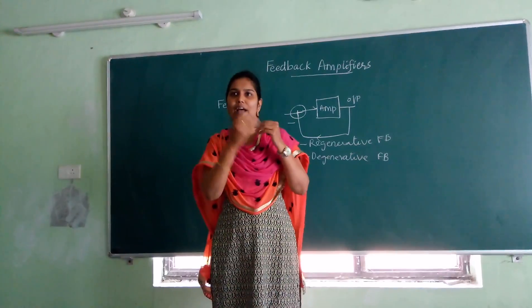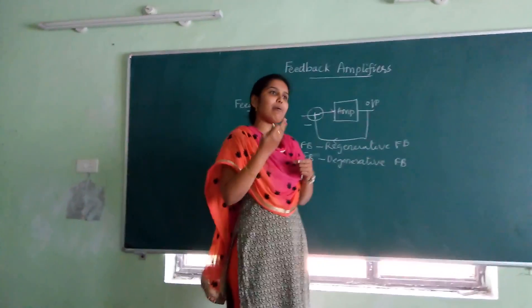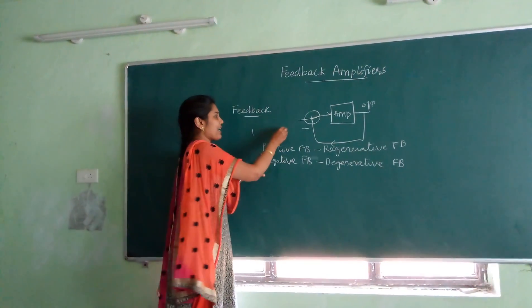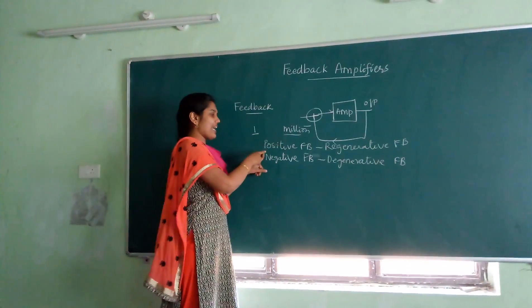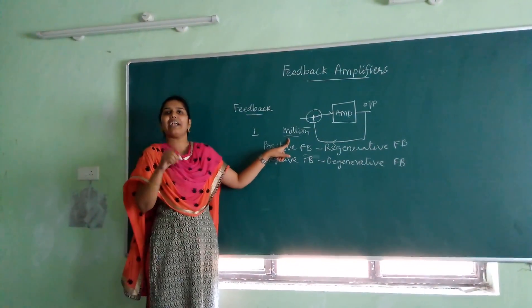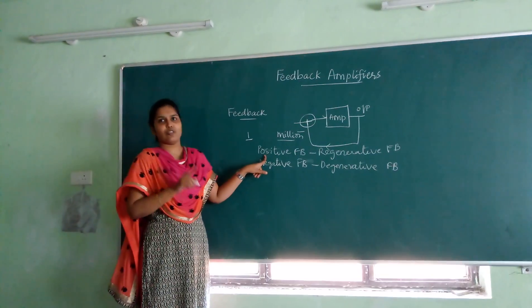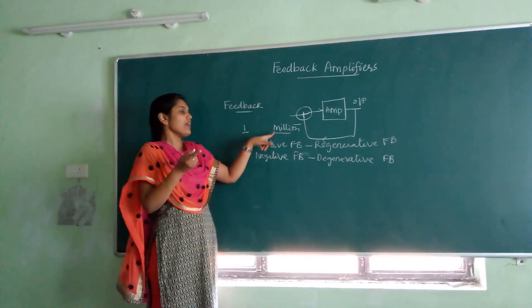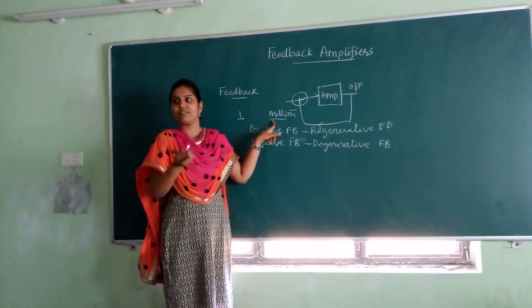If you give one as an input, the input may be multiplied some millions of times. In that case, the gain of the amplifier is increasing, but at the same time, the noise levels are also amplified and distortion levels are also getting amplified. This is the major disadvantage of positive feedback. Though the gain is increasing, it has the ill effect of increasing the noise and also increasing the distortion, which may distort the output of the amplifier circuit.